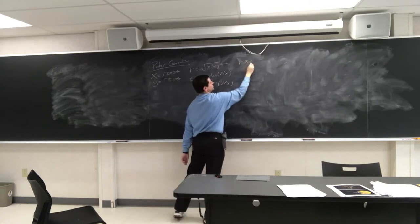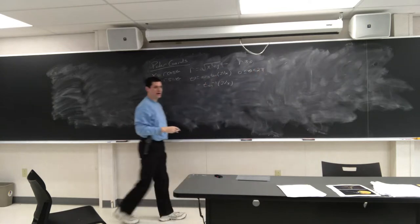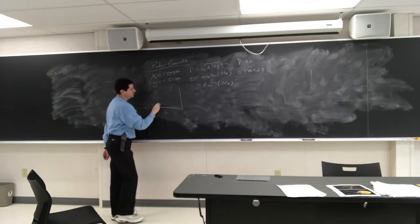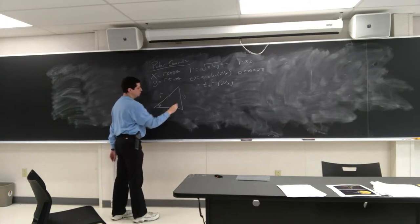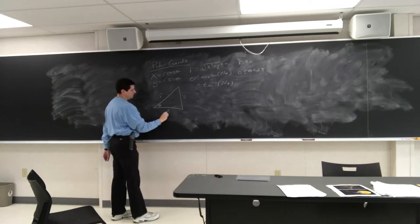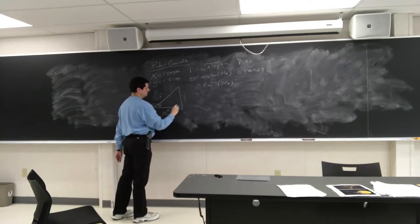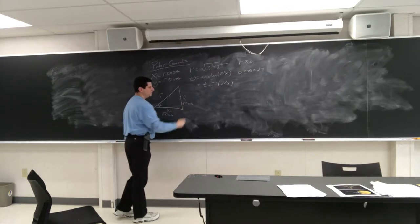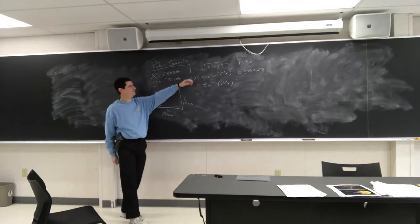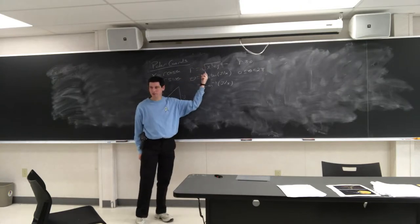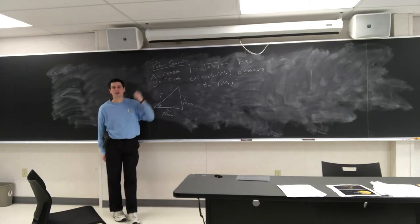In polar coordinates: x is r cosine theta, y is r sine theta, r is the square root of x squared plus y squared, and theta is arctan of y over x. We assume r is greater than or equal to zero, and zero less than or equal to theta less than two pi. Here's the picture: theta is the angle, r is the radius, x is r cosine theta, and y is r sine theta.